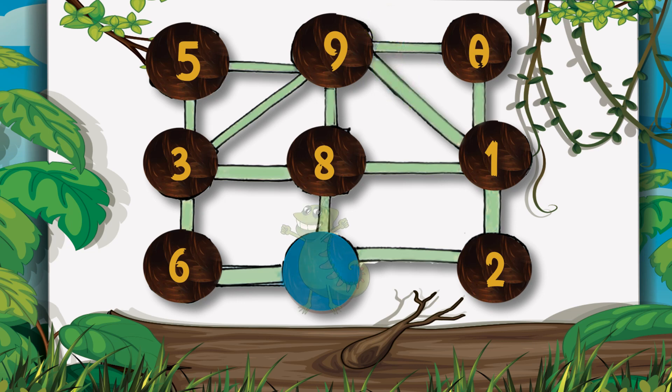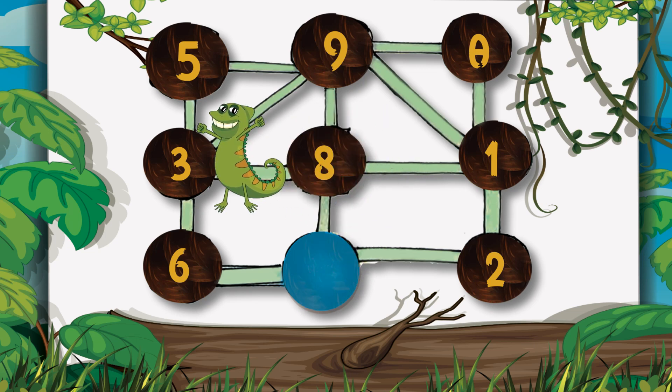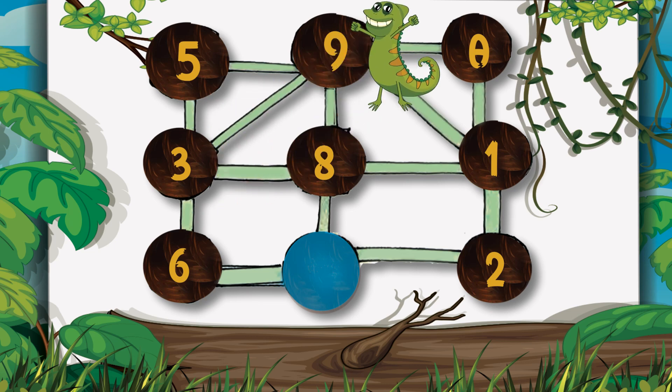What path can the lizard take to eat 20 insects? 8 plus 3 plus 9 — so 8 plus 3 plus 9 makes 20.